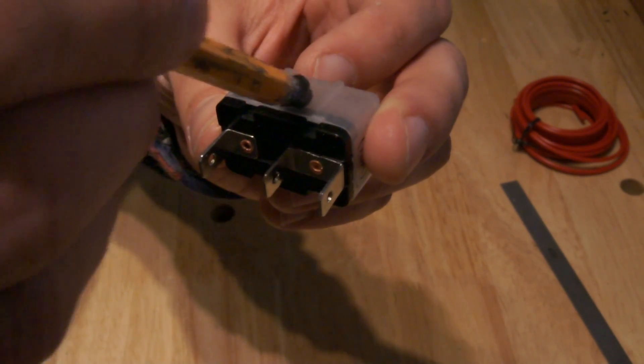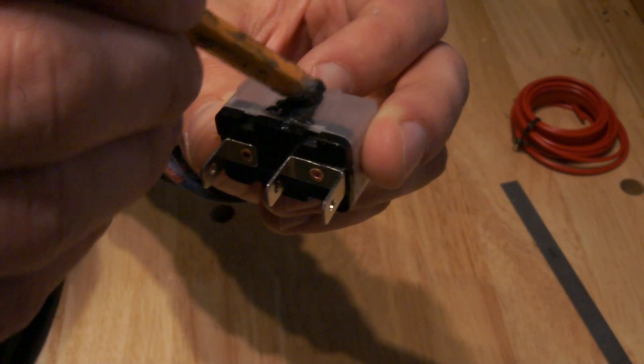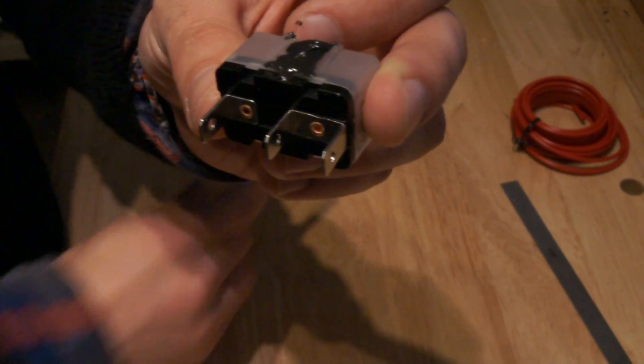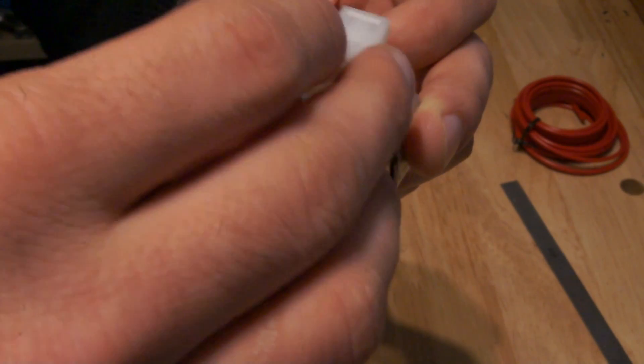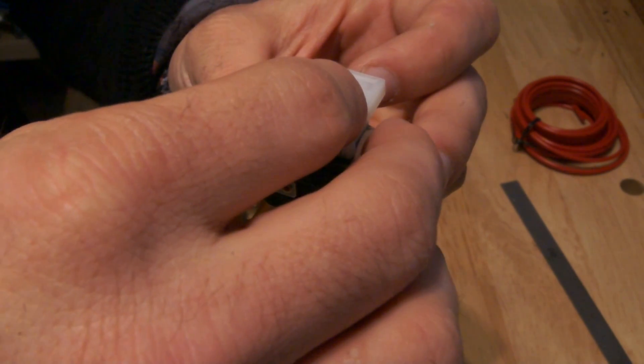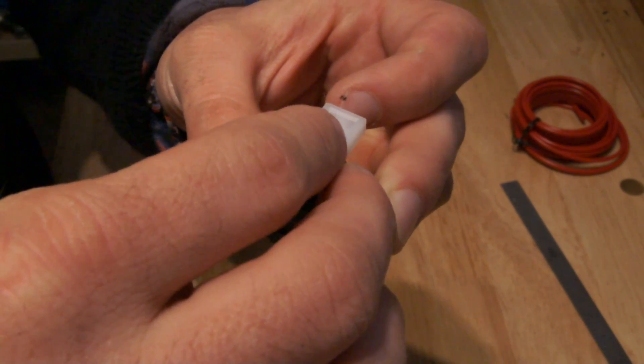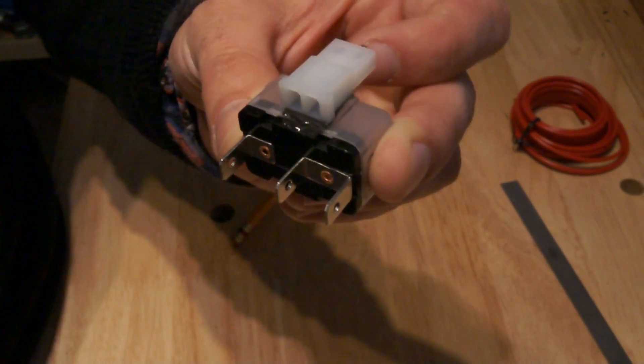We'll put a little JB weld on the center on the top. You want to use a good amount. Now we'll take our male AML connector and just place it in there and make sure that we get the end sticking out enough so that we can connect something to it and press it down firmly. We'll let that sit for four minutes.